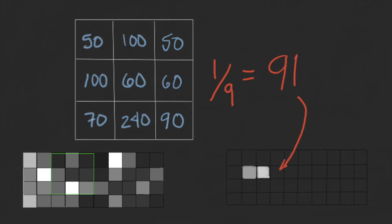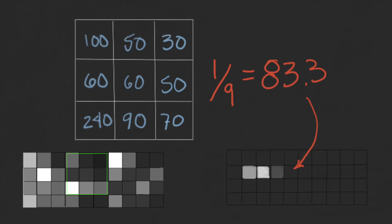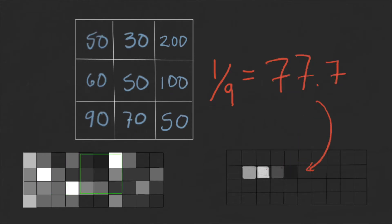We convolve the kernel across all the pixels in the image, and our smooth image is ready. By averaging the values in a small neighborhood, any pixel that is significantly different will be dragged back to the mean value of its neighbors.